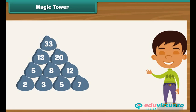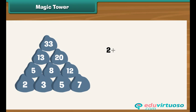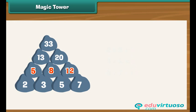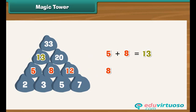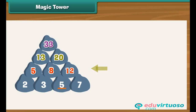Look at these number stones arranged as a tower. There is a pattern in them. Taking the stones in the bottom row: 2 plus 3 equals 5; 3 plus 5 equals 8; 5 plus 7 equals 12. These form the row above. Then 5 plus 8 equals 13 and 8 plus 12 equals 20, forming the next row. Finally, 13 plus 20 equals 33, which forms the topmost row. Every stone starting from the second row is the sum of the two stones beneath it.